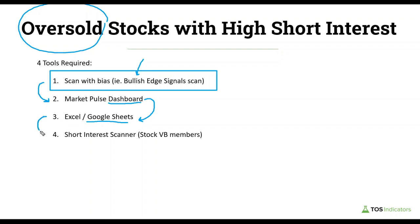Once we have the final list of stocks to analyze further, we can plug that into Excel to get a comma-separated list. If you don't have Excel, Google Sheets is a free alternative. Finally, once we have that comma-separated list of stocks, we can run our short interest analysis using the scanner built inside our stock volatility box platform. If you don't have access to that platform, you can use alternatives such as TD Ameritrade to find short interest percentages for each stock on a one-by-one basis, which adds a little more time but is a free alternative.